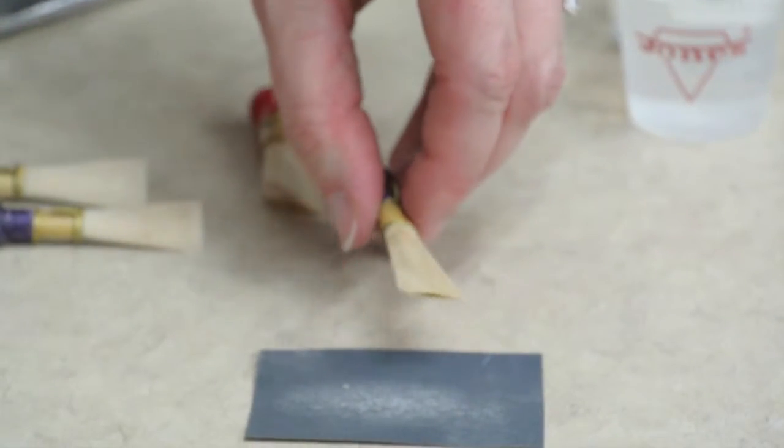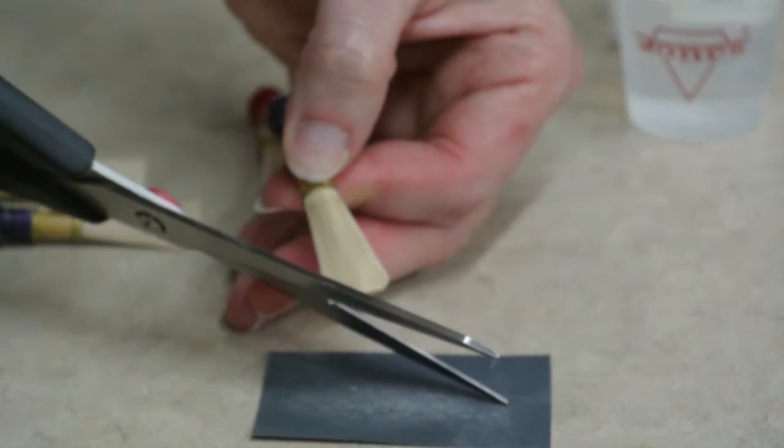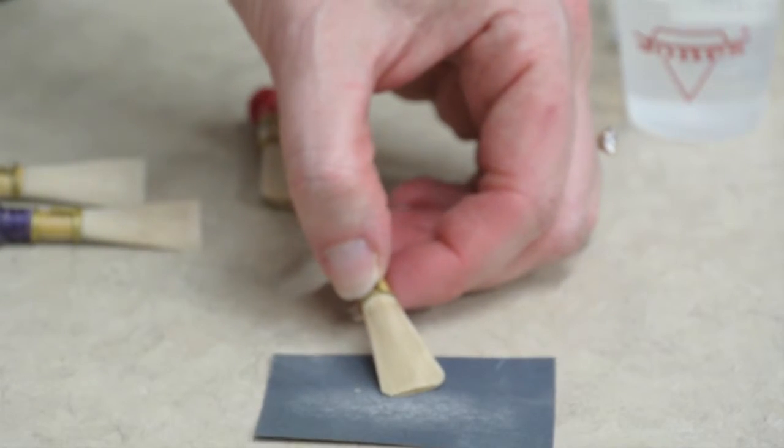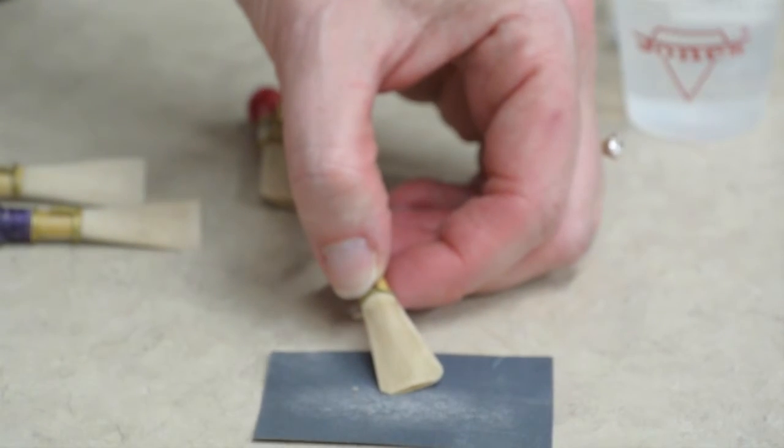If you really don't like how this looks, just go ahead and snip the other corner too. This will not have a dire effect on how your reed responds or vibrates.